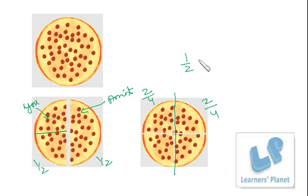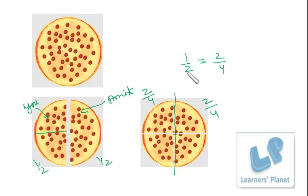That means two by four and one by two, both of them are the same. One by two is equal to two by four. So we call them equivalent fractions. If you eat two pieces out of four, that means you are eating one piece out of two — both of them are the same thing.